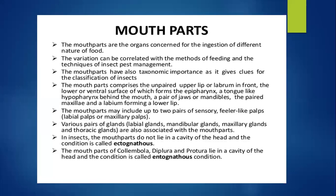Mouthparts are the organs concerned with the ingestion of a variety of food available in nature. The variation of mouthparts can be correlated with different feeding habits and the techniques of IPM, which is called insect pest management. With the help of mouthparts, one can know the taxonomical importance of insects, as mouthparts give clues for the classification of insects into various groups.